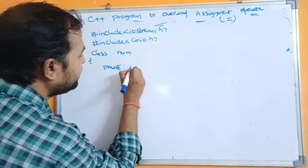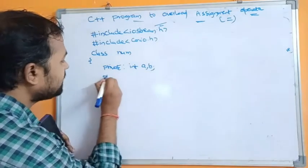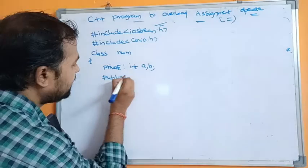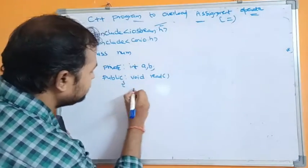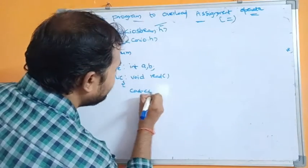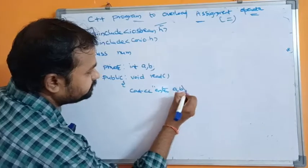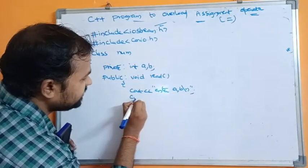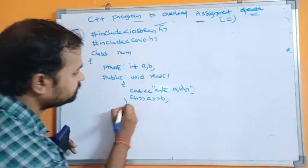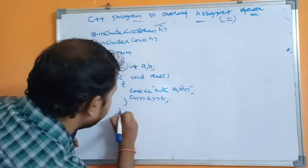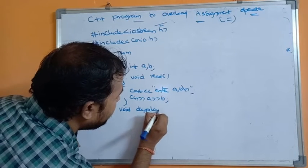Next, the class name is num. Under the private section, let us declare two variables: int a, b. Under the public section, let us have a read method. By using the read method, we have to read these two values: cout << "Enter a, b" and then cin >> a >> b. Next, define the display function in order to display a and b values.